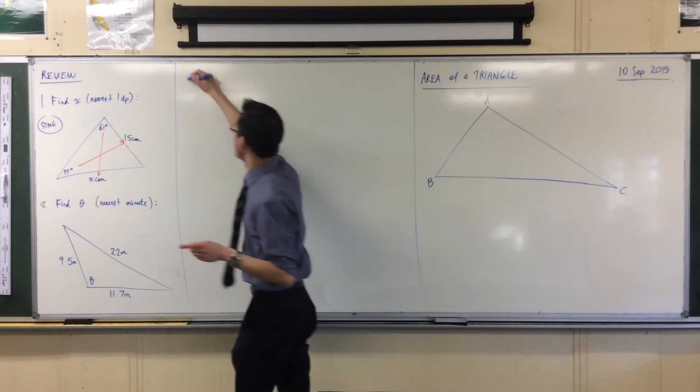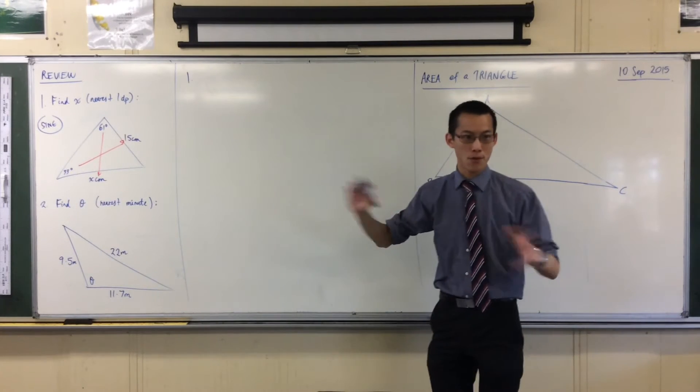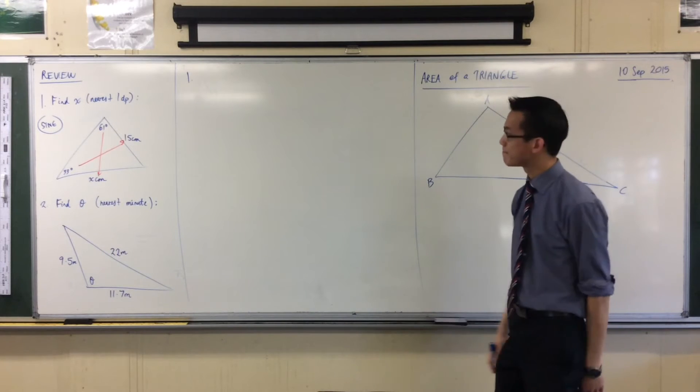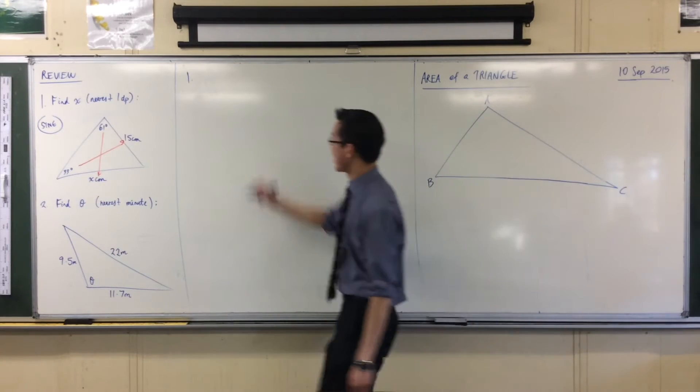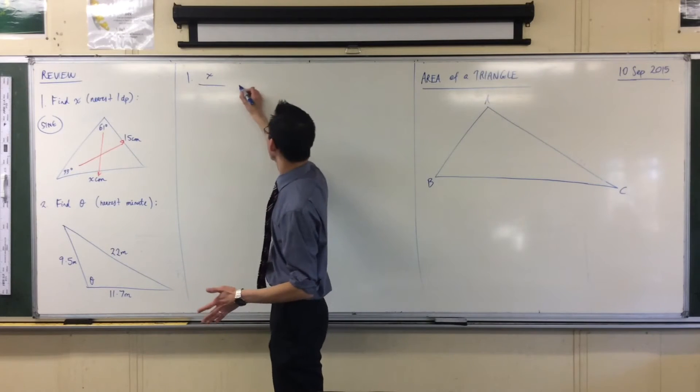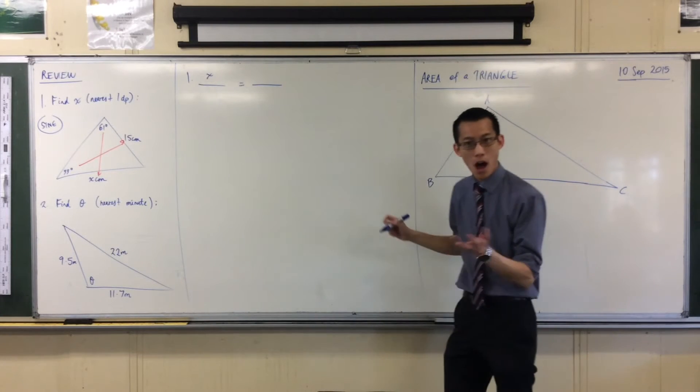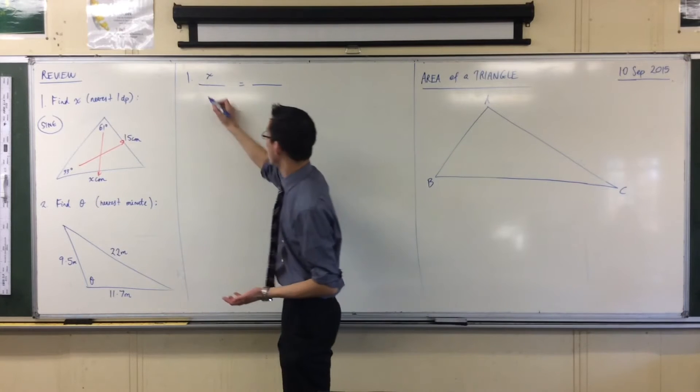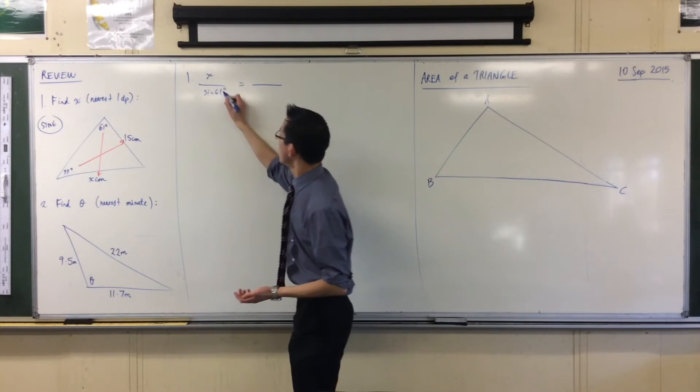So what should I write as my first line before I start actually solving the thing? Okay, so I've got x. That's what I want to solve, right? The sine rule has this pair of fractions, right? So x over sine 61. It's matching angle. Don't forget degrees.